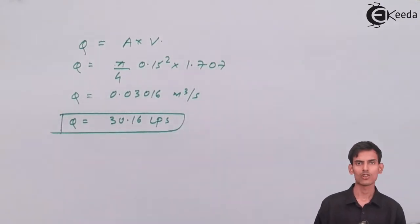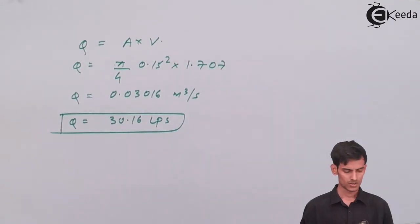So this is the value of discharge, 30.16 liters per second. It was a simple question based on different types of losses. I hope you have understood this. Thank you.